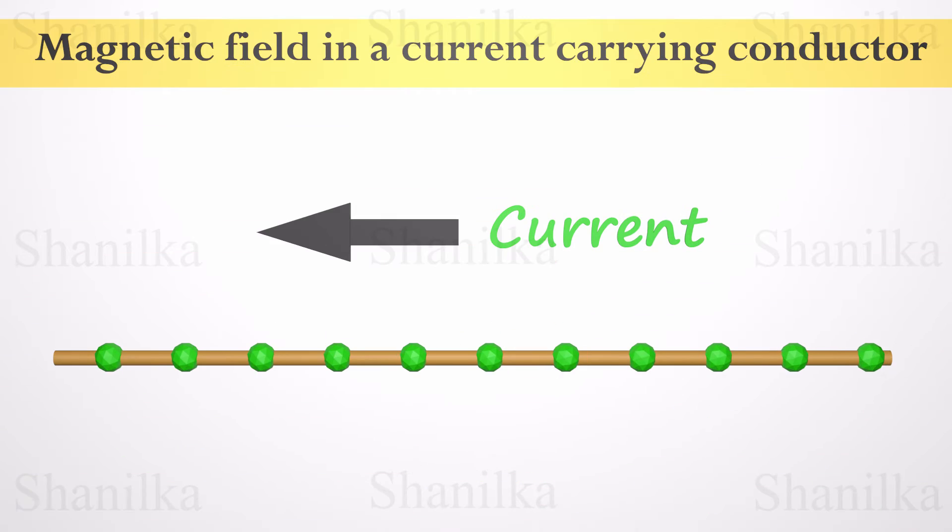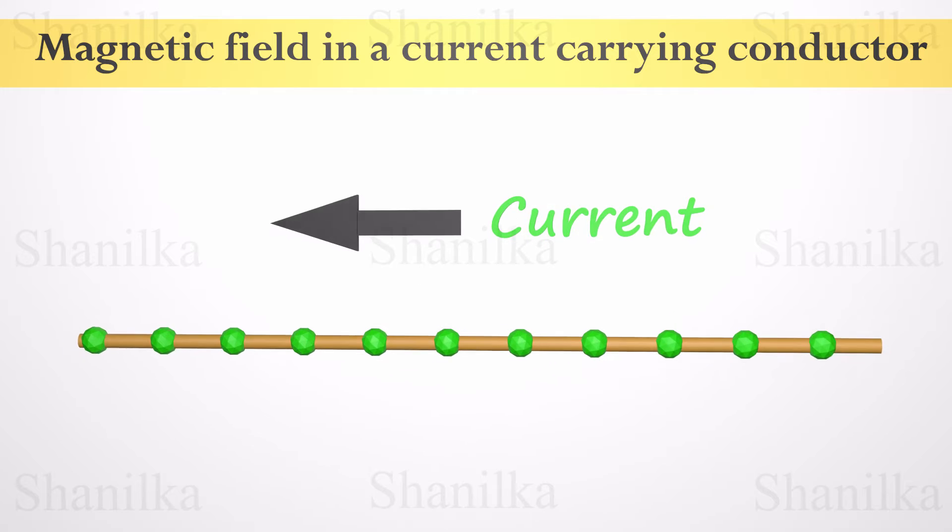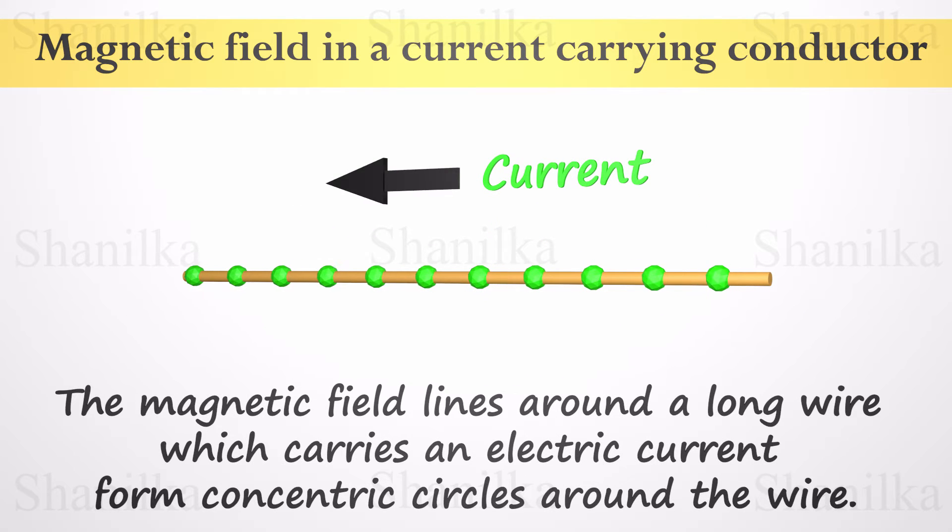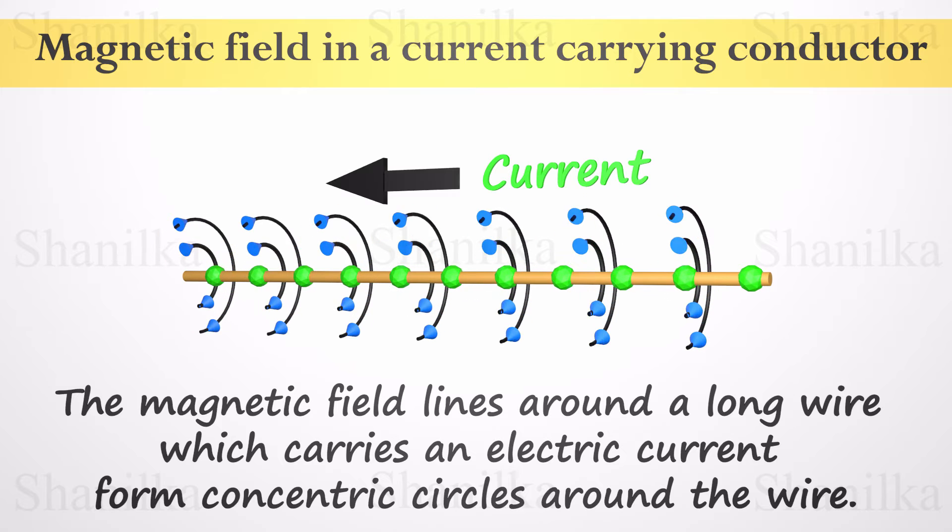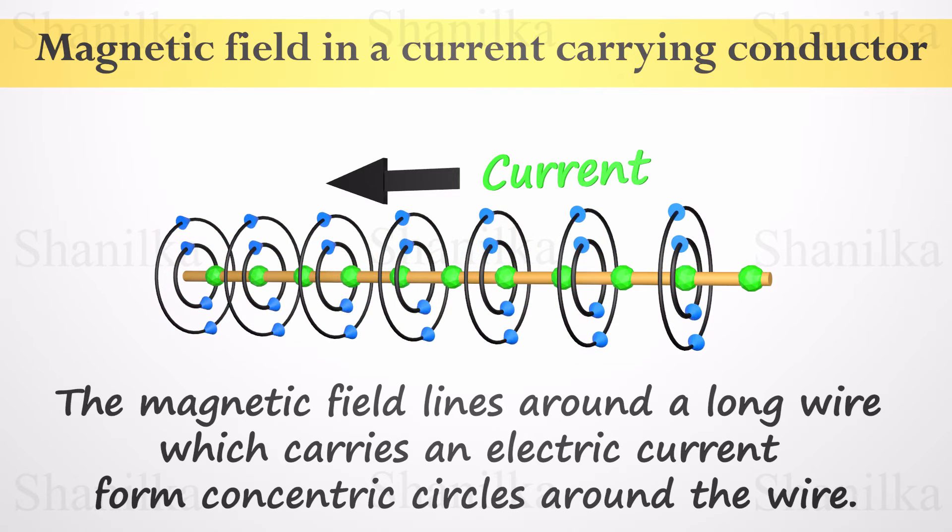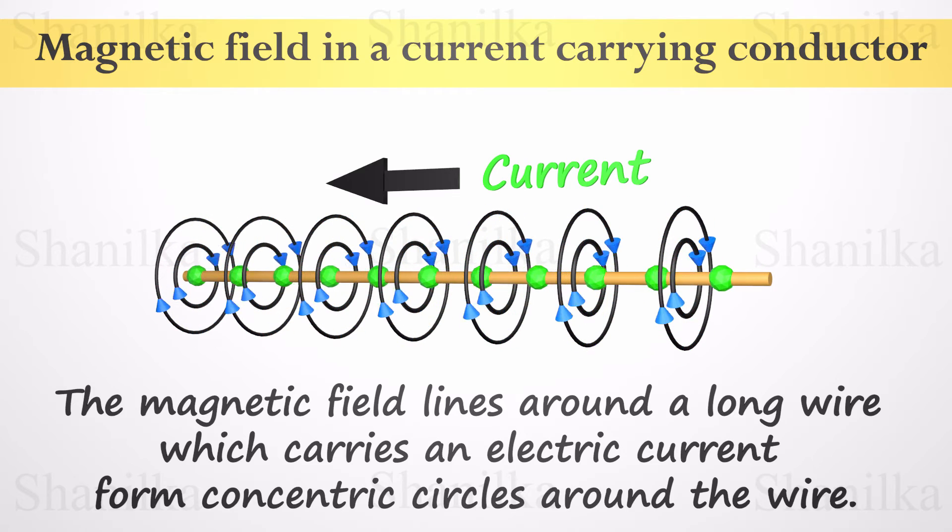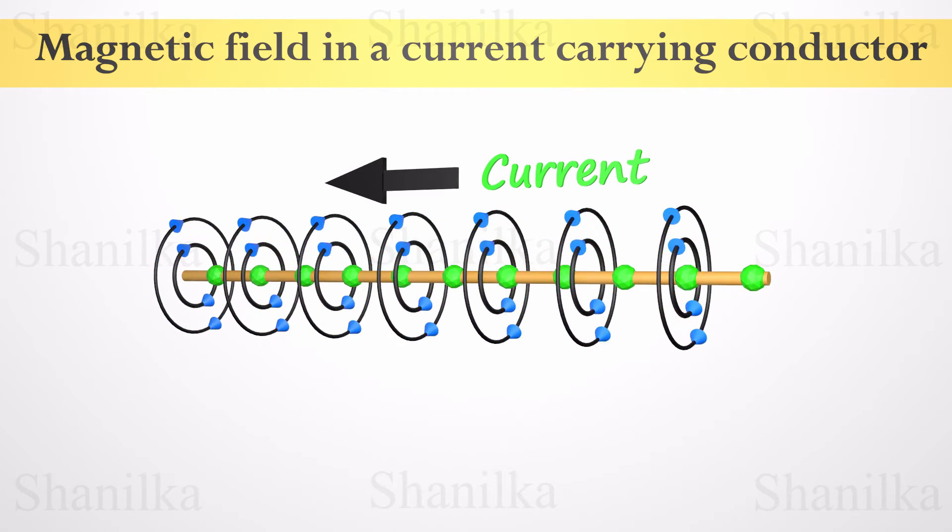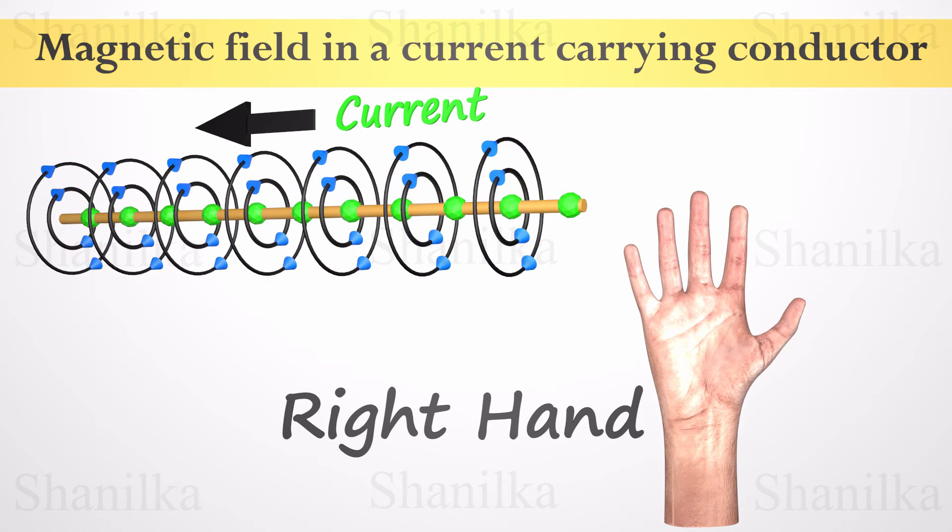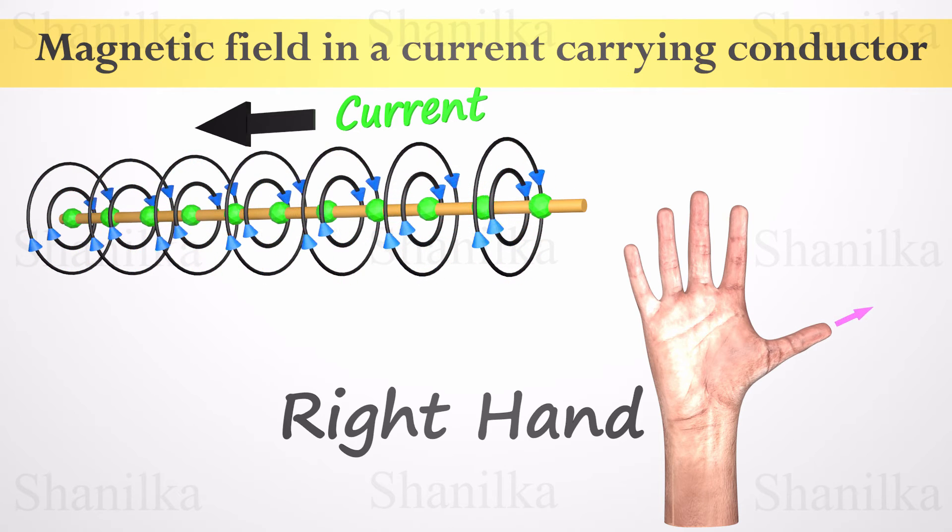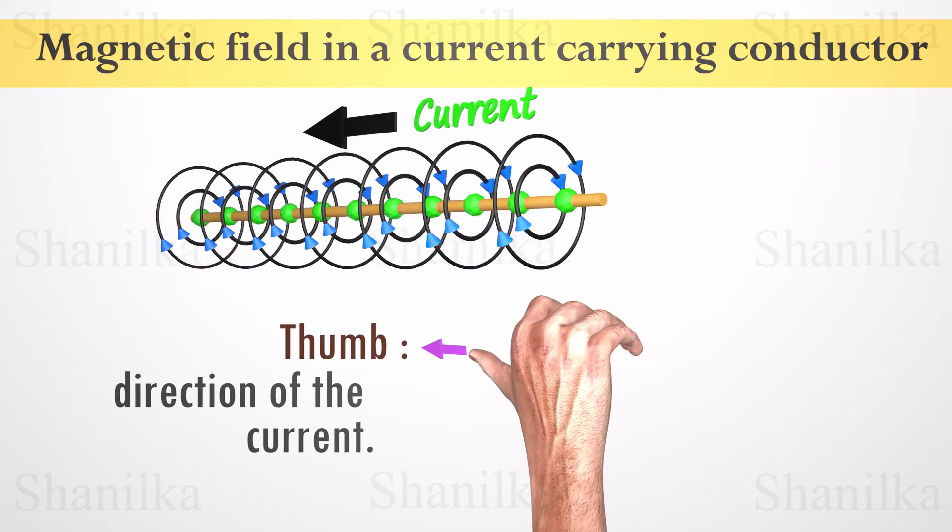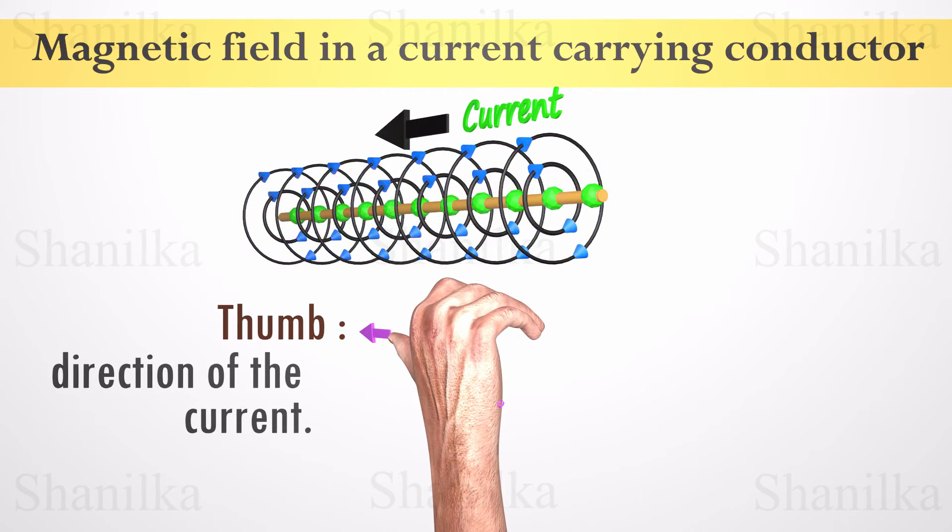This is a current-carrying conductor wire. The magnetic field lines around the long wire which carries an electric current form concentric circles around the wire. The direction of the magnetic field is perpendicular to the wire. There is a simple method to find out the direction of the magnetic field around a wire. Take your right hand and point the thumb in the direction of the current. The direction of your other finger's curling is the direction of the magnetic field.